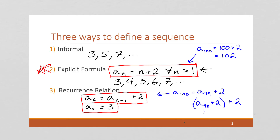Ideally, what we would like to do is start with a recurrence relation and convert it to an explicit formula. The reason we'd ever want a recurrence relation is that they are often very elegant and much easier to come up with than an explicit formula. So if we have a way of coming up with a recurrence relation and then converting it to an explicit formula, that's often much easier than coming up with the explicit formula directly.